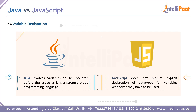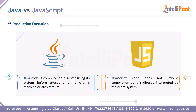Coming to point number five — production execution. Java code gets compiled on the server itself using the native computing hardware, and then the results can be seen on a client's machine. Primarily, Java is meant to execute on a server and display output on the client's machine. JavaScript is different — it does not involve compilation because the code gets directly interpreted, and this happens on the client's system in the browser. So execution on the server by Java code differs greatly from JavaScript code that gets directly executed and interpreted on the client's machine.